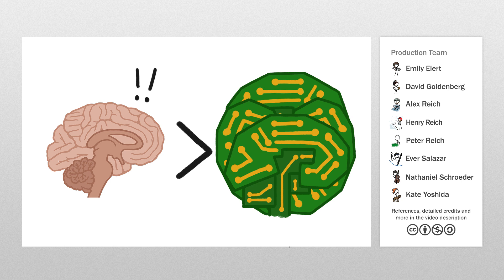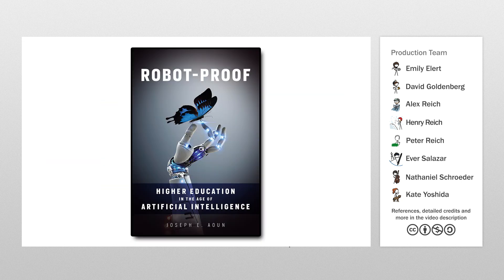That's why this video's sponsor, the new book Robot Proof by Northeastern University President and Higher Ed Futurist Joseph E. Aung, proposes that universities need to do more to ensure lifelong education for humans in careers that are the least likely to be automated. In particular, those that are creative and entrepreneurial.